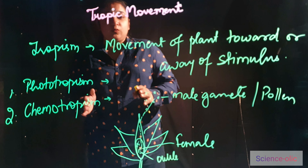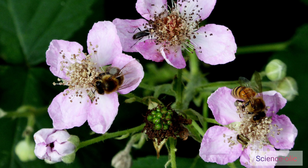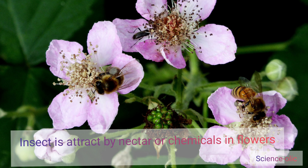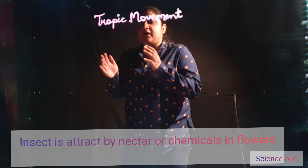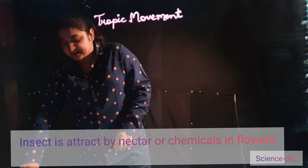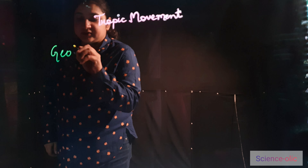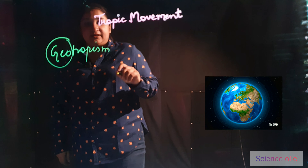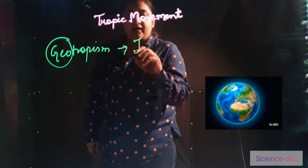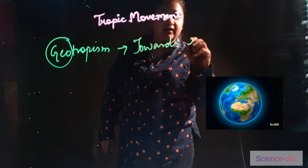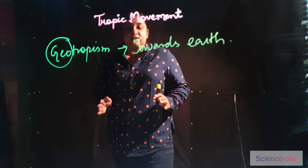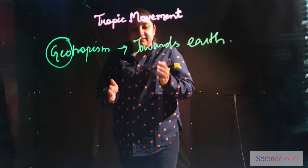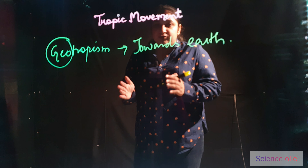The movement towards chemicals — you are seeing this image in which the insect is attracted by the nectar and chemicals produced by the flower. This is another example of chemotropism. The next is geotropism. Geo means gravitation towards the earth — movement towards the earth.